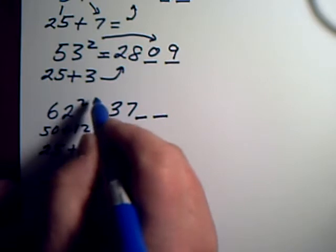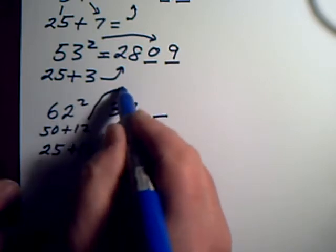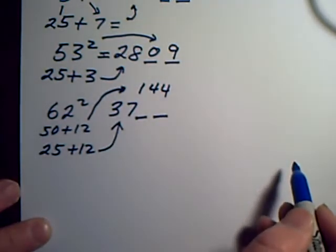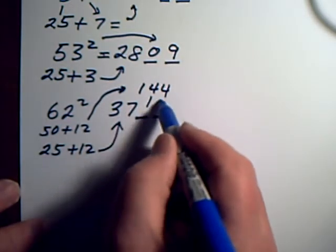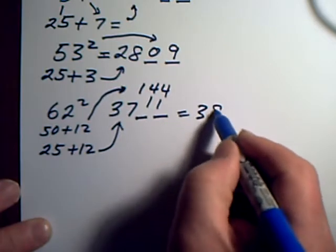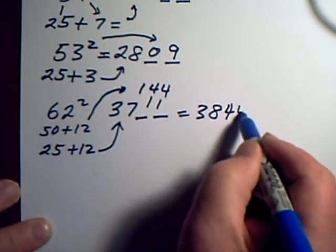And in the two spots after that I'm going to put 12 squared which is 144. The 4 and the 4 are going to drop there and the 1 will add on to the 7, so I get 3844.